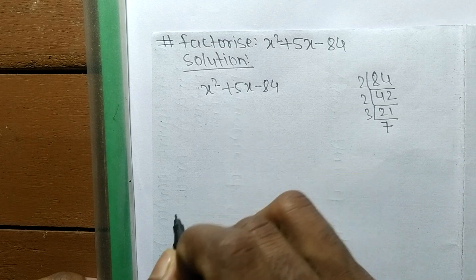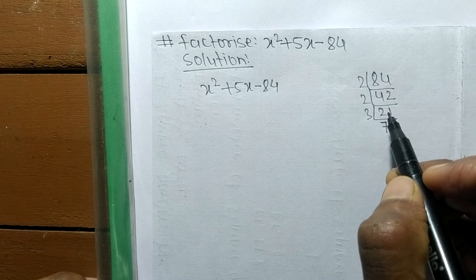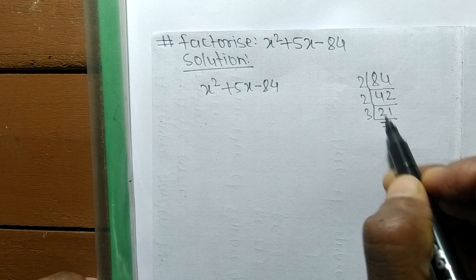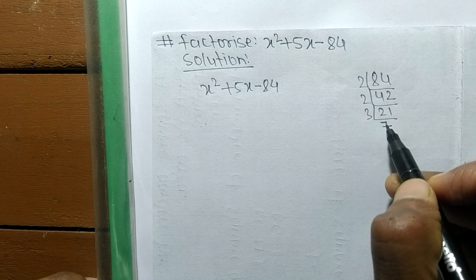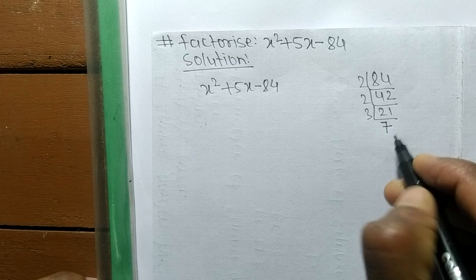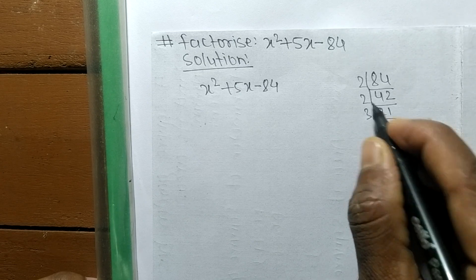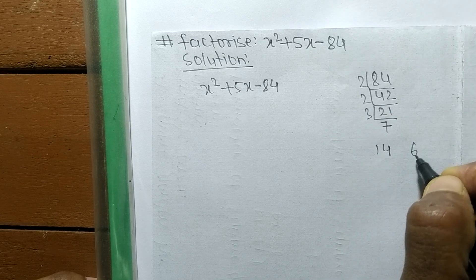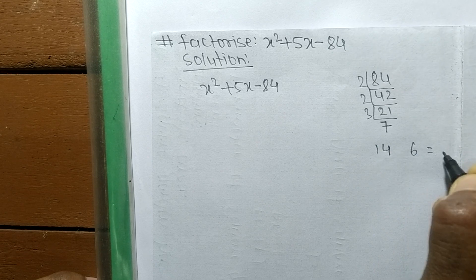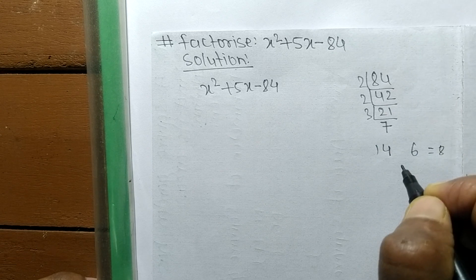When we multiply the first and last numbers, 2 times 7 equals 14, and 3 times 2 equals 6. So 14 minus 6 equals 8, which doesn't give us the middle term.